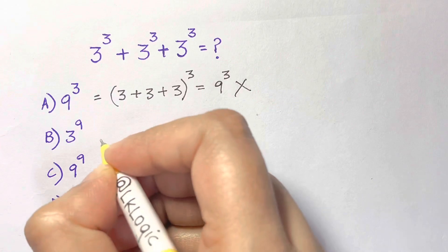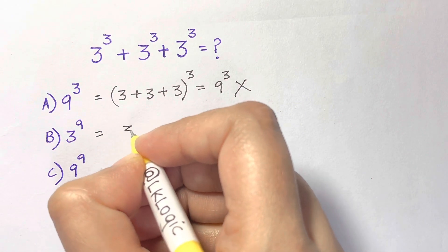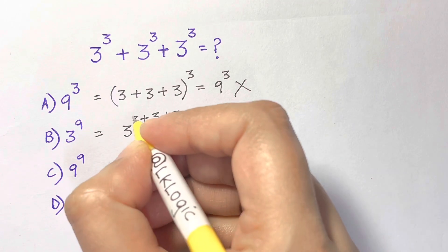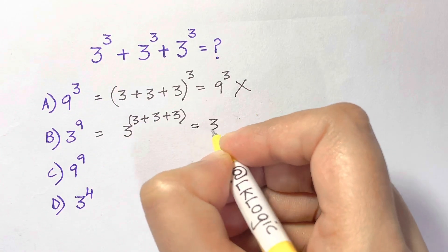Then this here, you have 3 and the sum of the exponents: 3 plus 3 plus 3, that gives you 3 to the power of 9. Still wrong.